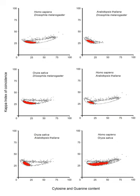Some promoters contain one or more upstream promoter elements (UP elements). Subsites consensus sequence 5'-AAAAAAAA-R-N-R-3' when centered in the −42 region; consensus sequence 5'-AWWWWWWW-TTTTTT-3' when centered in the −52 region.